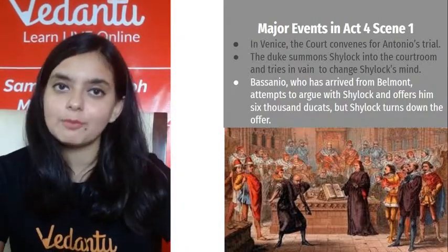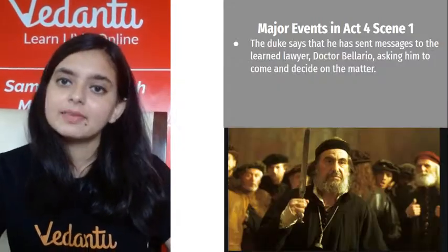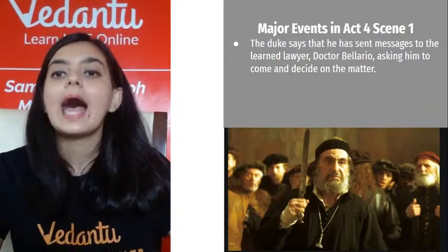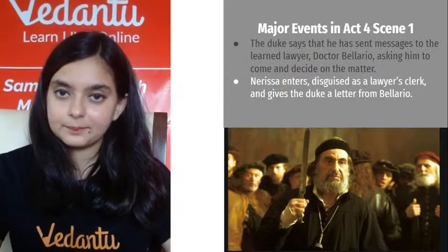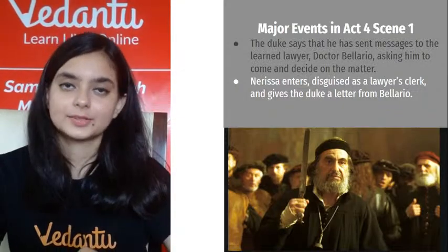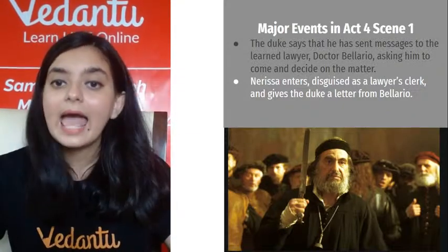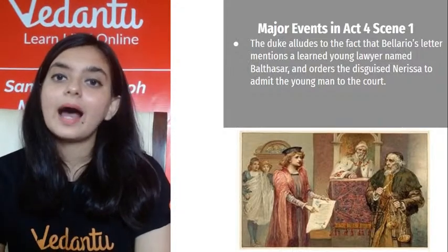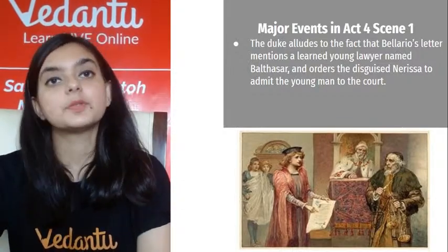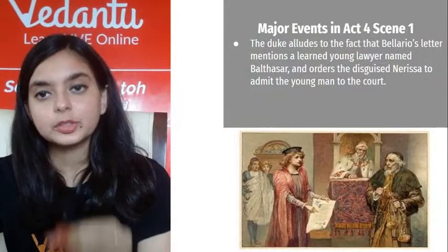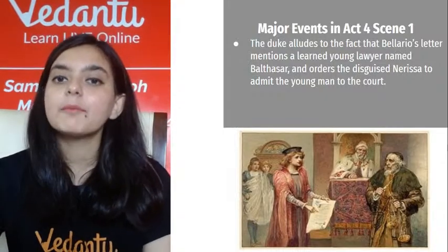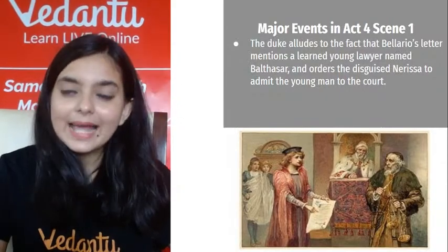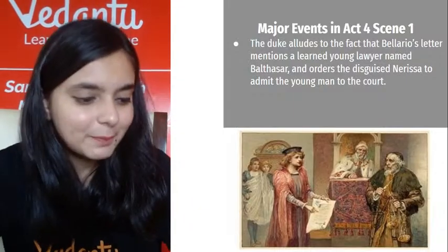The Duke says he has sent a message to the learned doctor Bellario to come and decide on the matter. Nerissa enters disguised as a lawyer's clerk and gives the Duke a letter from Bellario. The Duke notes that Bellario's letter mentions a learned lawyer named Balthazar. Someone called Balthazar is going to come to take up the case — can you guess who it is?